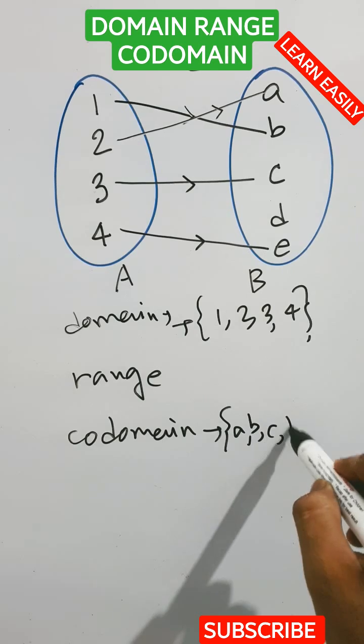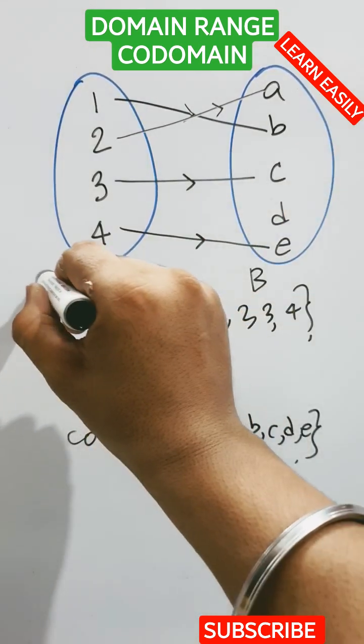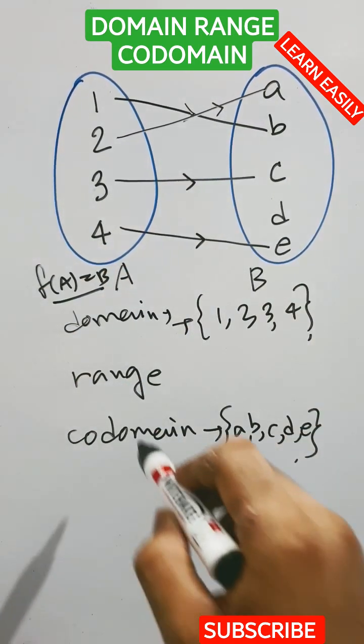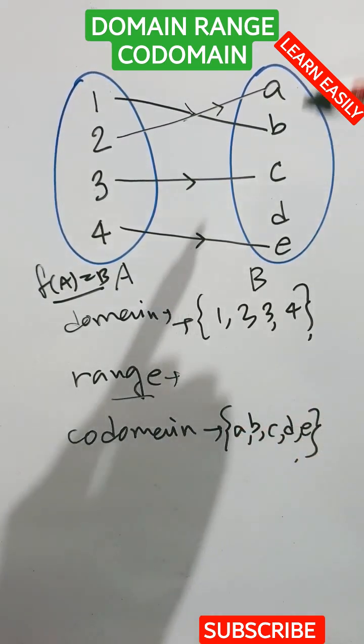This is a, b, c, d, e. Now, the function is defined as f of A is equals to B. So we can write this definition. First of all, now we have to find the range.